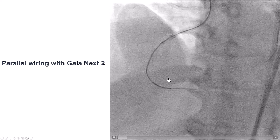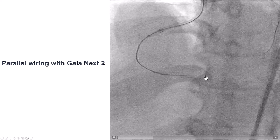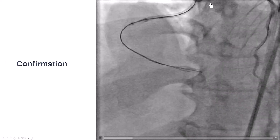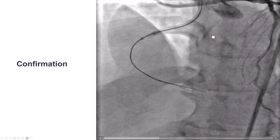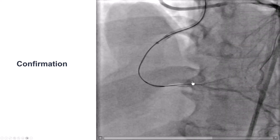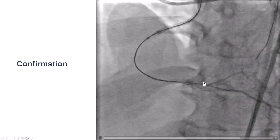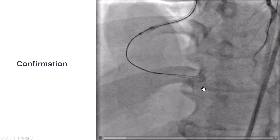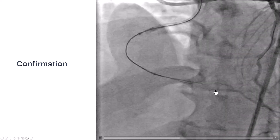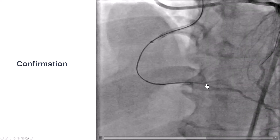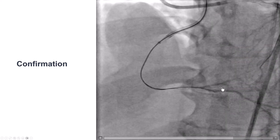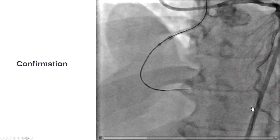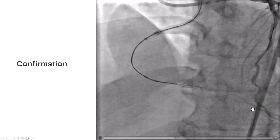In this case, the Gaia NEX2 seemed to go in the right direction. This is a contralateral injection, and here we can see that the second wire, the Gaia NEX2, is in the true lumen. We also advanced it during the injection, confirming that the guide wire is moving freely inside the distal RCA and the PDA.